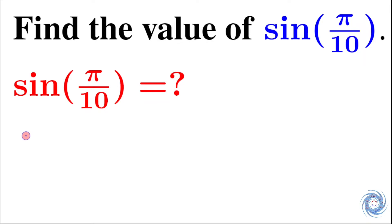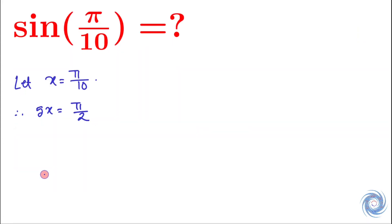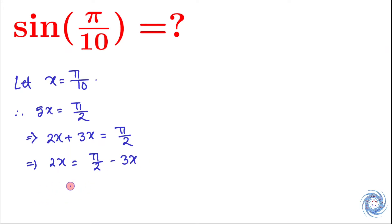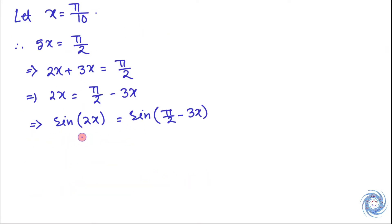Let us assume that x equals pi over 10. Then we have, and this implies. Now let us take sin function on both sides, so this can be written as.